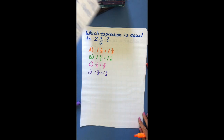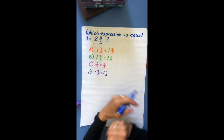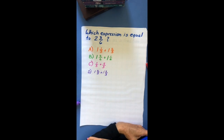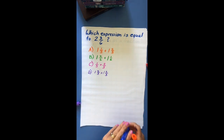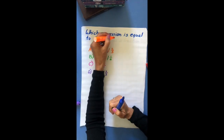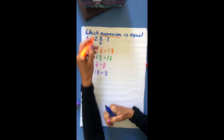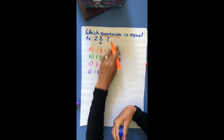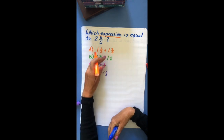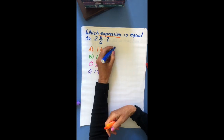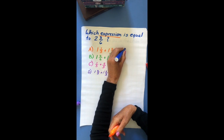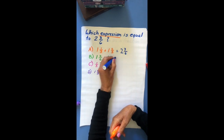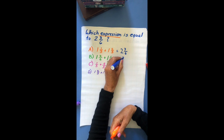Next problem: Which expression is equal to 2 and 3 sixths? Stop the video now. The key word is 'expression' — these are all expressions because they don't have an equal sign. We're finding which one equals 2 and 3 sixths.